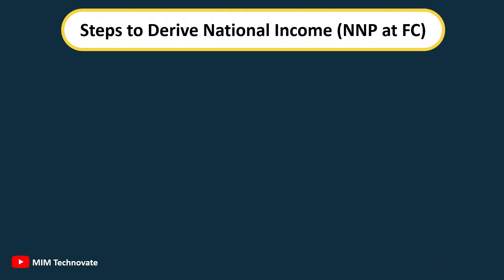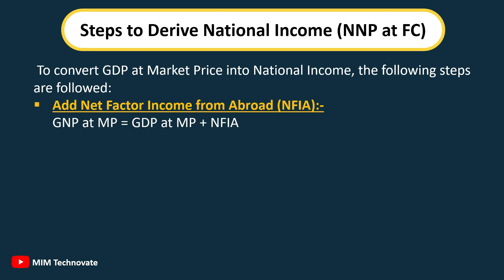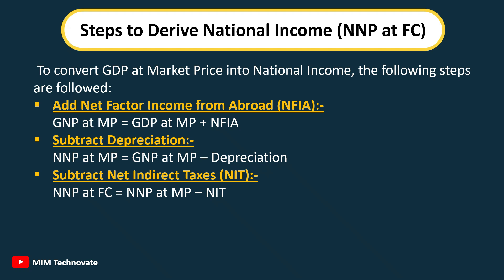Steps to derive National Income, NNP at FC: To convert GDP at market price into national income, the following steps are followed. First, add Net Factor Income from Abroad, NFIA: GNP at MP = GDP at MP + NFIA. Second, subtract depreciation: NNP at MP = GNP at MP − Depreciation. Third, subtract Net Indirect Taxes, NIT: NNP at FC = NNP at MP − NIT.